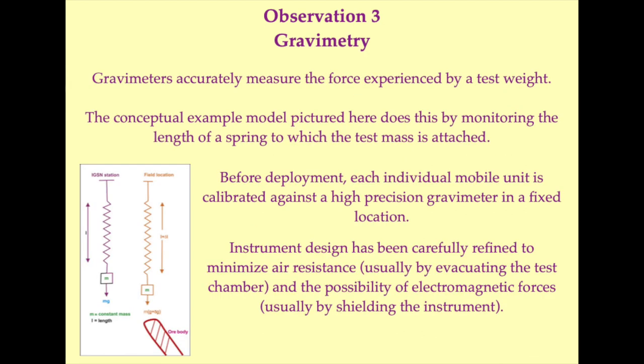In recent decades, gravimetry has become a central component of scientific investigation. Gravimeters work by precisely and accurately monitoring the force applied to a test mass. In the schematic illustration shown here, this is done by observing the extension of a spring from which the test mass is suspended. There are, however, a number of alternative techniques for determining gravitational acceleration, which will be considered in the following slides.